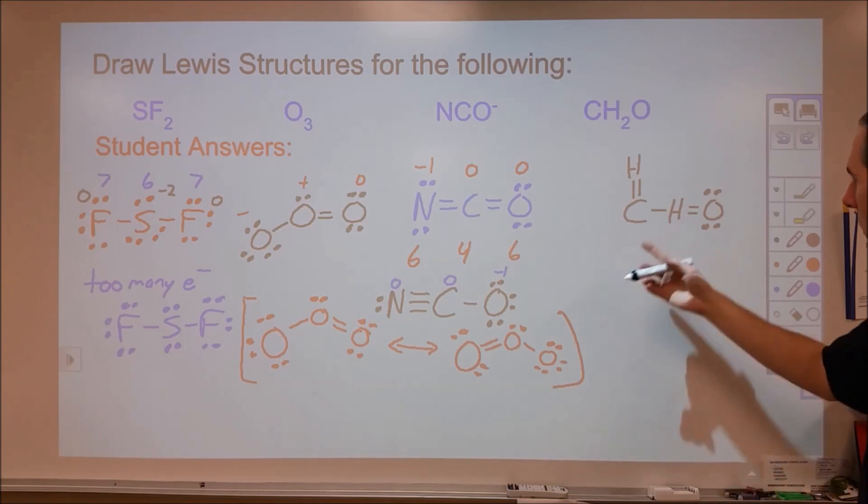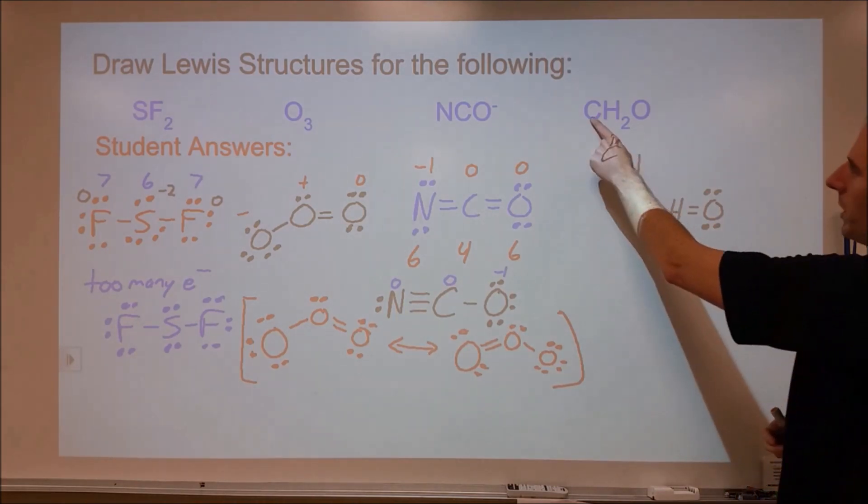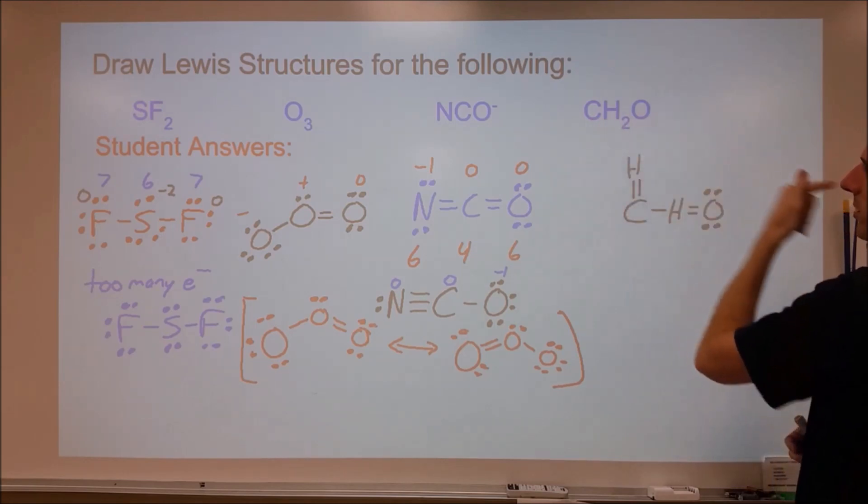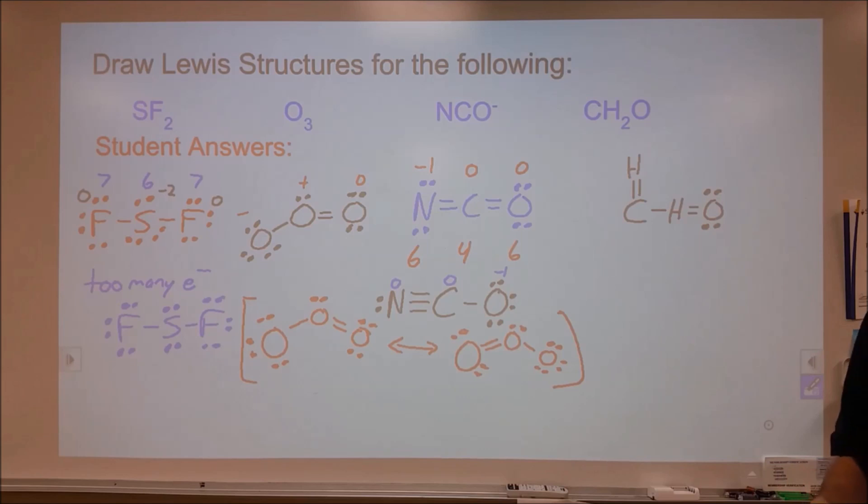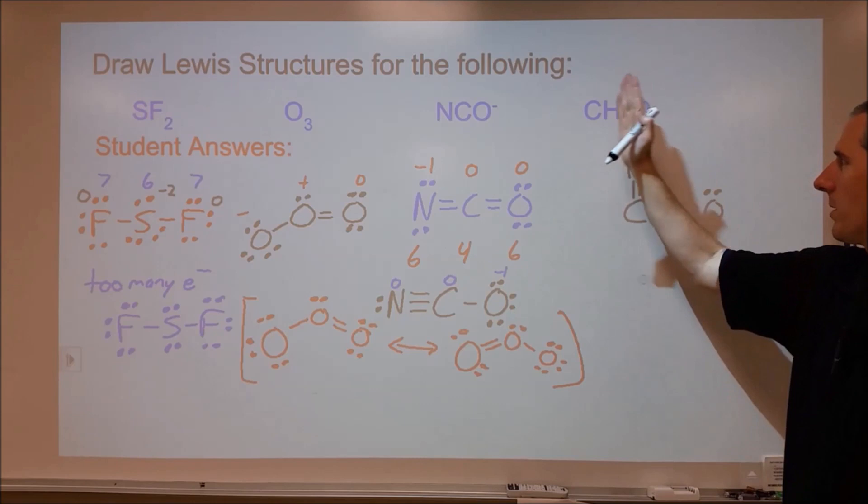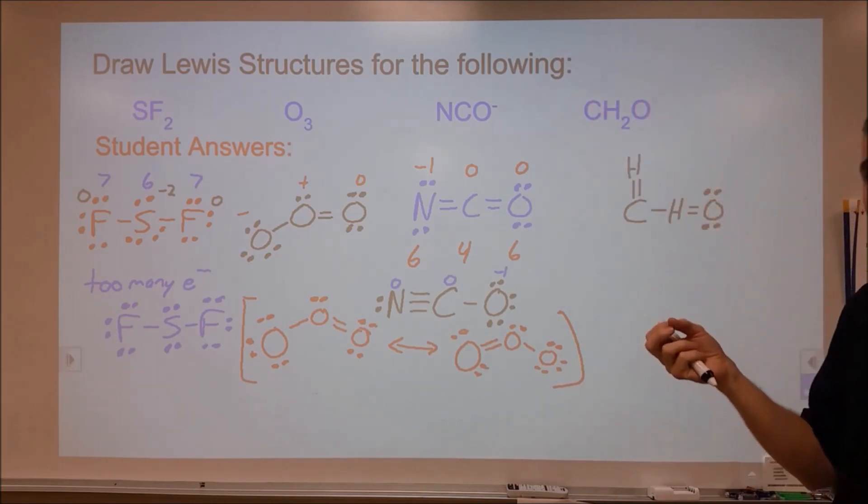And on to the last one here. Here we have formaldehyde. This student clearly is very lost on what they're doing. They're doing a lot of things that are very wrong. One of the problems is when they're reading this, they're reading this as the carbon has to be connected to the two hydrogens and the hydrogens to the oxygen. And that's not necessarily the case. Really, in order to come up with a Lewis structure for CH2O, one of the things that can be very useful is to think of this in terms of how many bonds does this thing normally make? How many bonds does carbon normally make, hydrogen and oxygen?